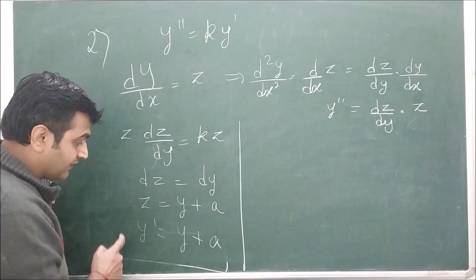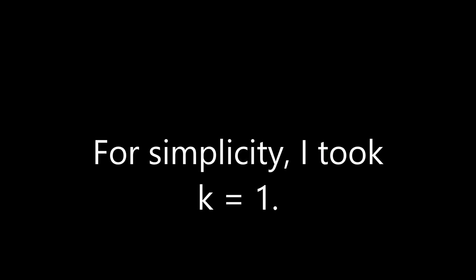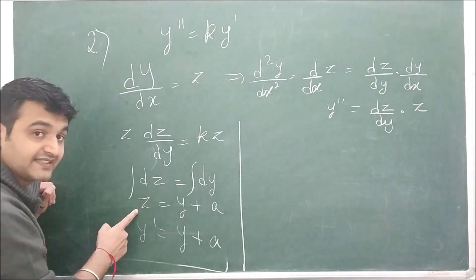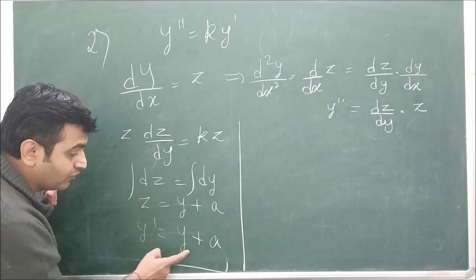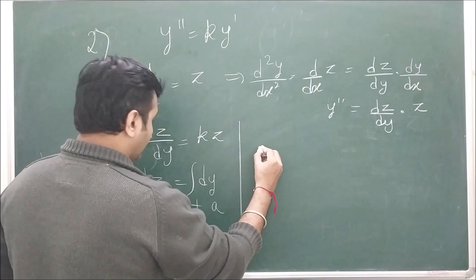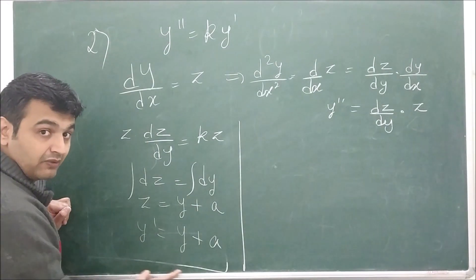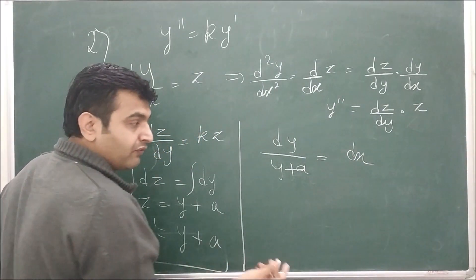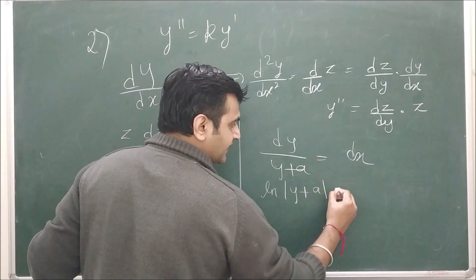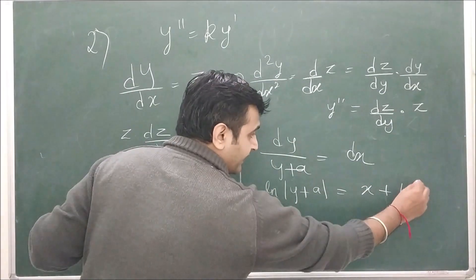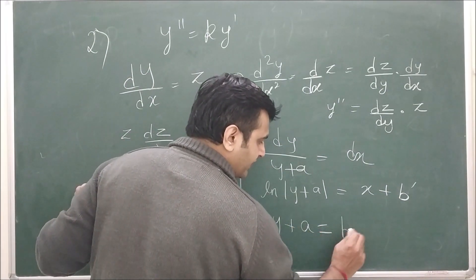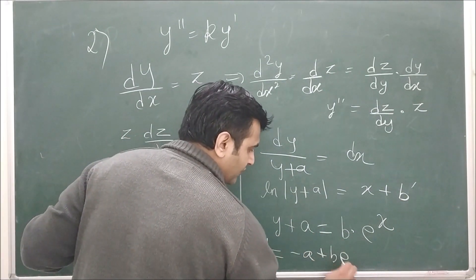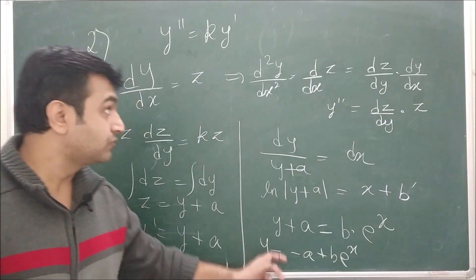After cancelling z on both sides, we get dz equal to dy. Integrating both sides gives z equal to y plus a. Since z equals y prime, we get y prime equal to y plus a. Applying variable separable: dy over (y plus a) equals dx. Integrating both sides gives ln(y plus a) equal to x plus b prime. Taking exponentials, y plus a equals b times e to the x, so y equals negative a plus b times e to the x.